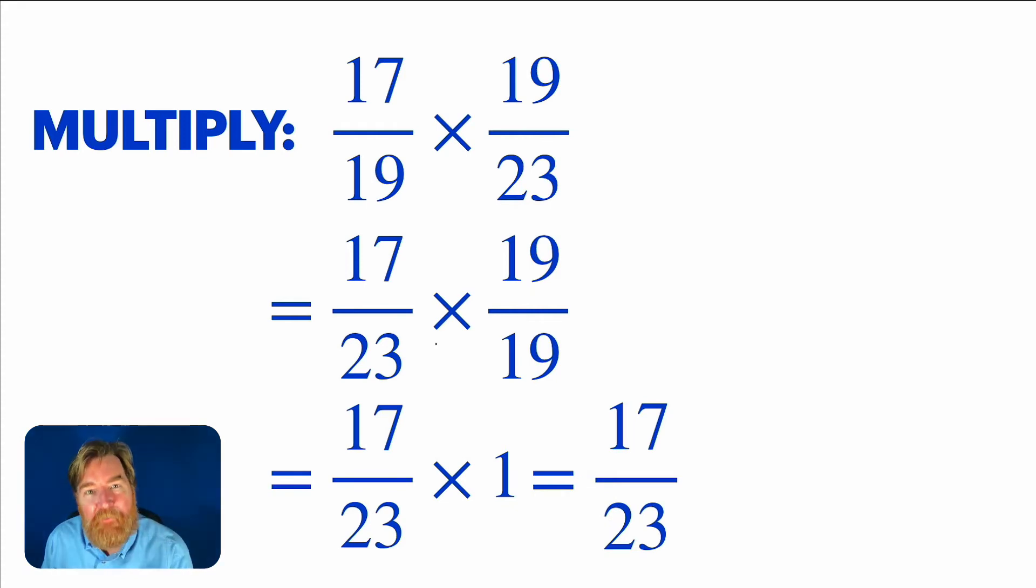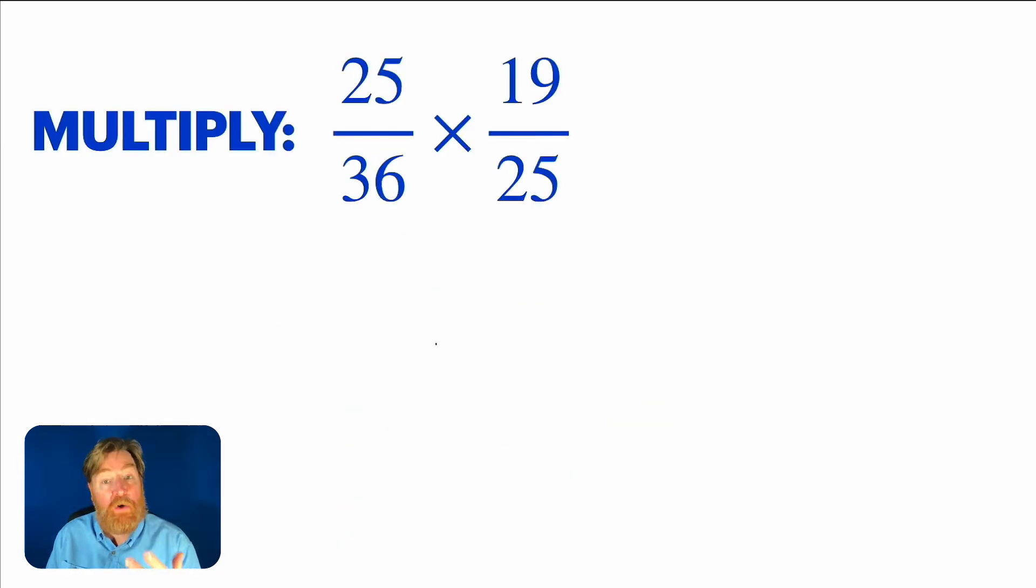What we did here is we simplified before we ended up multiplying. That's going to be really, really helpful. If you can see that, that's a great move. Here's one more, just because we did that really fast. And it looks so good, it's like magic. But check this out. If you had twenty-five thirty-six times nineteen twenty-fifths, wouldn't it be great? See those two twenty-fifths? Let's commute two of the factors.